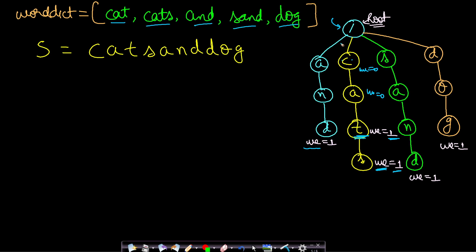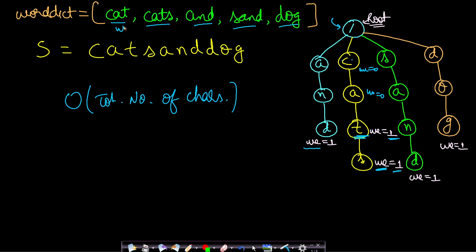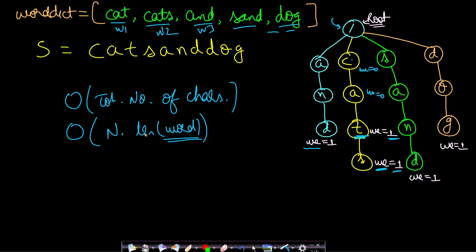What is the time complexity for building this Trie? It will be order of total number of characters — that is, the sum of characters across all words in the dictionary. In generalized format: number of words multiplied by the length of the longest word. That's the time complexity to build the Trie.